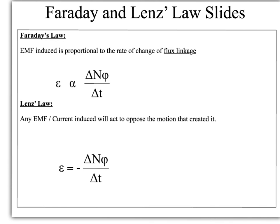So once Faraday had done that, his work continued by a scientist called Lenz. And what Lenz's law says is that any EMF or current induced will act to oppose the motion that created it. So if you induce a current in a wire, the magnetic field around that current will act in such a way as to oppose the motion that created it. And you will see lots of examples of this as you work through the topic.